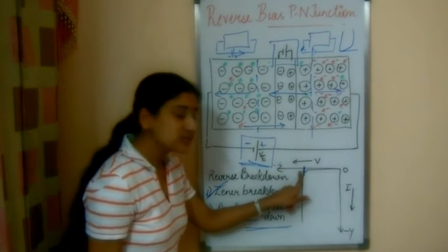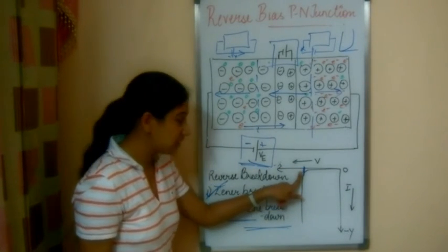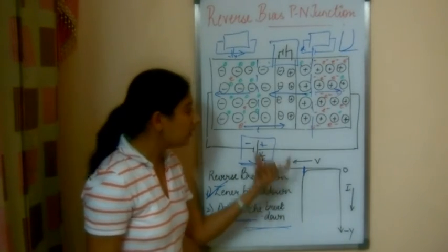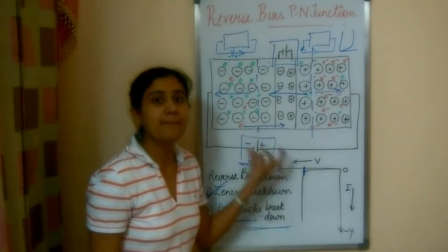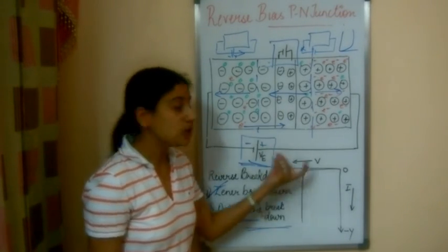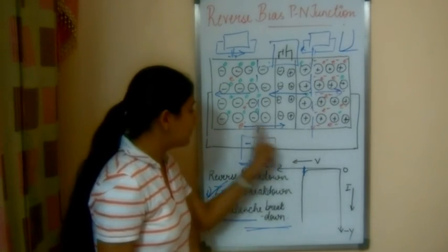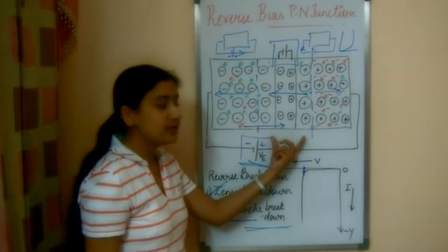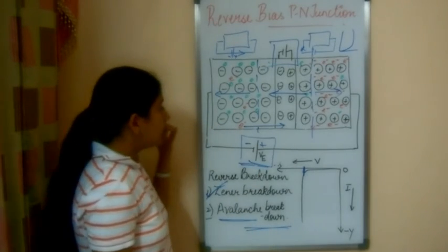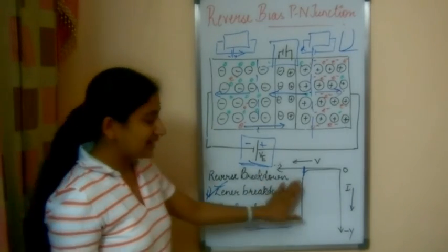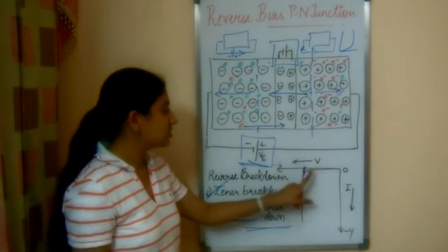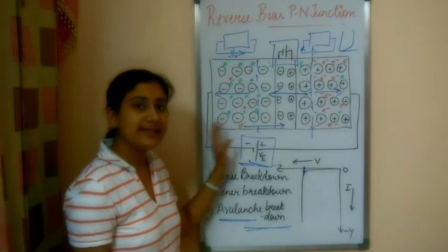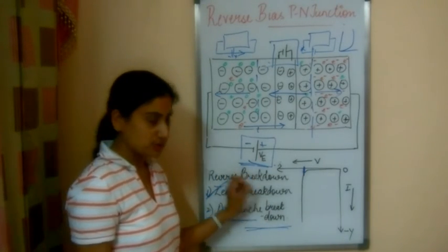This voltage is called the breakdown voltage. The term 'breakdown' means the junction breaks because it cannot tolerate that much applied voltage — the junction is broken. Practically, we do not take our junctions to these voltages because the junction cannot be recovered after removing this potential.